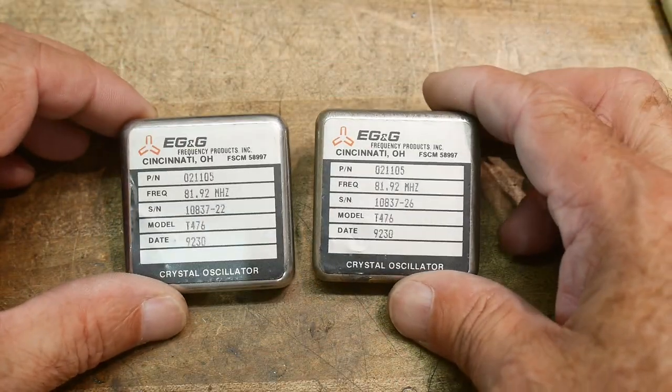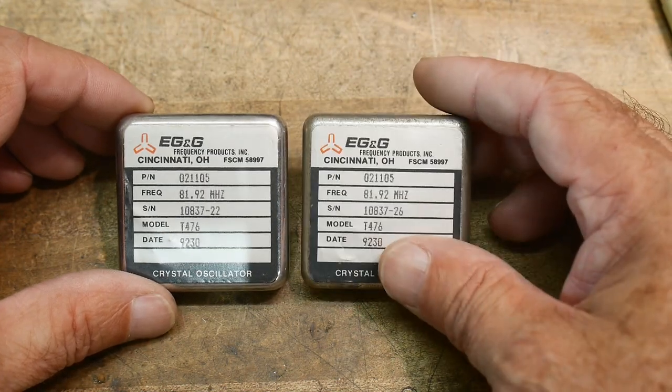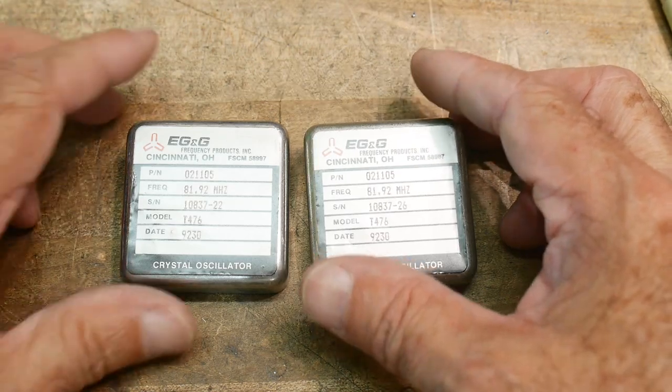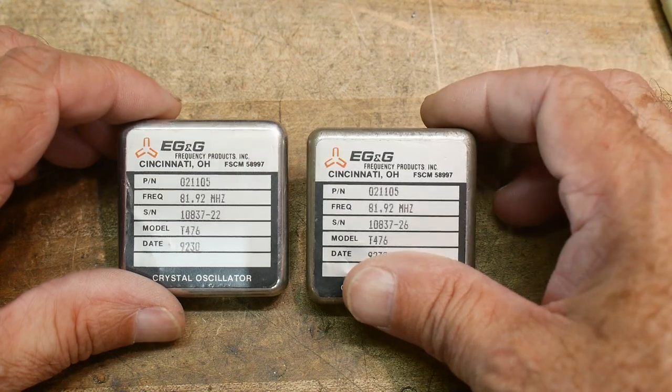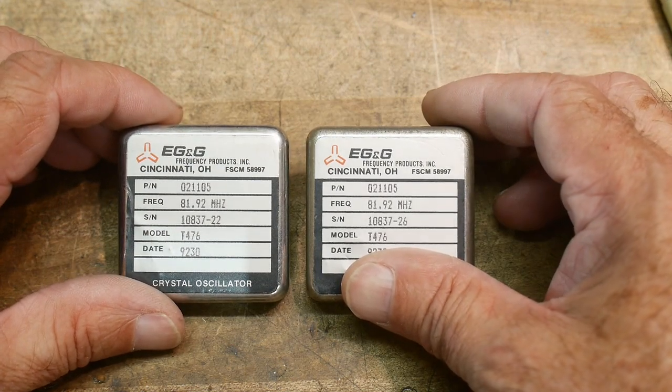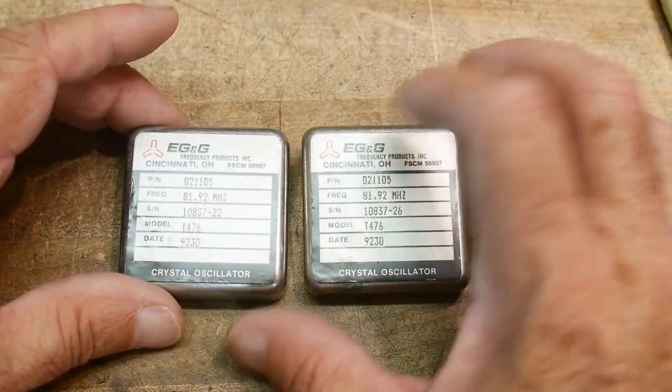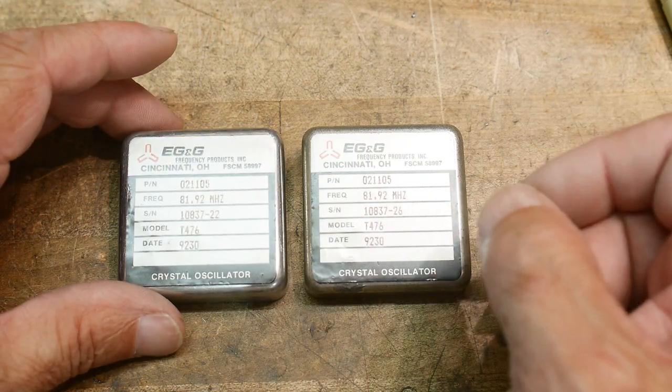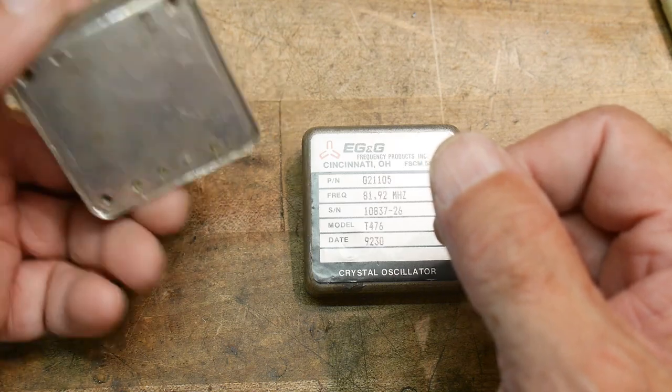A couple other items from the junk store: EG&G Reticon. I don't remember when the two merged. I think they were separate companies and then merged. Anyway, EG&G and Reticon got together.